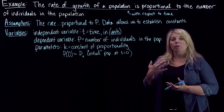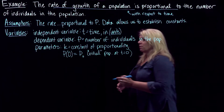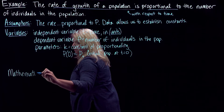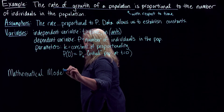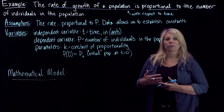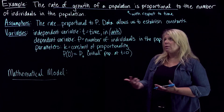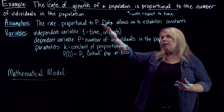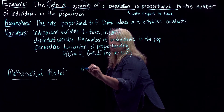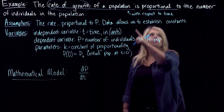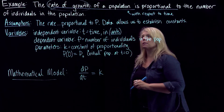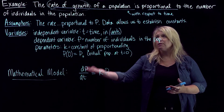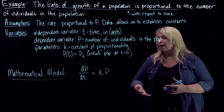Then we want to write a mathematical model — using as simple a model as possible that describes the situation. Since we're using differential equations and we have a rate of change, that's going to be a derivative. We've got a rate of growth, so that indicates a derivative: rate of growth of a population with respect to time. So dp/dt is proportional to — equals k times the number of individuals in the population, which is p. This is a very simple mathematical model that translates our assumption directly into an equation.